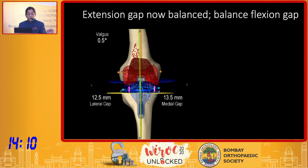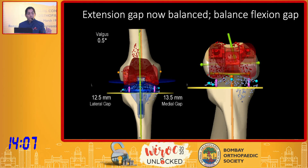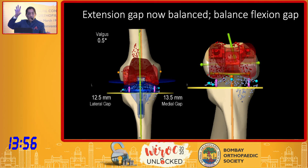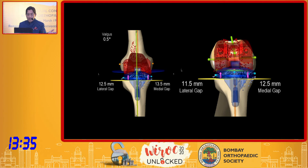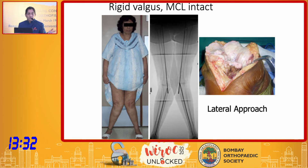Once the extension gap is balanced, you figure out how to balance the flexion gap accordingly. You have multiple options: sizing the femur, moving it anterior-posteriorly, and rotating it. By doing this you can achieve a balanced flexion gap, resulting in perfectly balanced gaps overall. The difference between navigation and robotic is that with navigation you make the cut with a saw, whereas the robot makes the cut based on your plan — but the software and planning are the same in both.